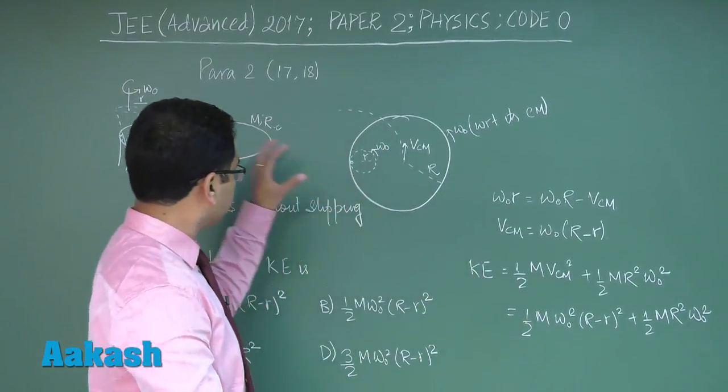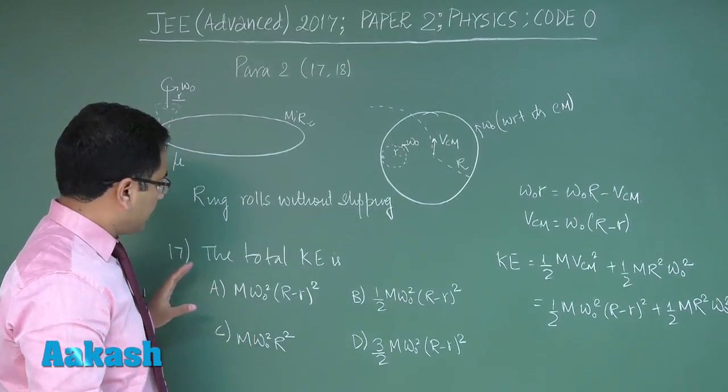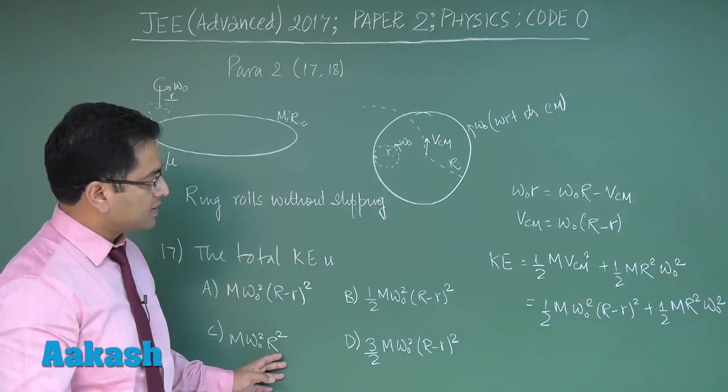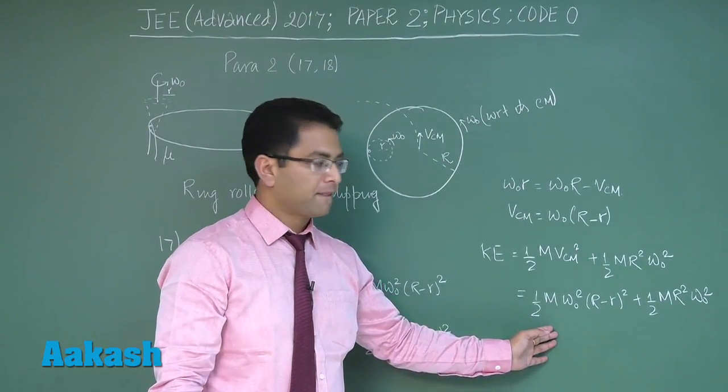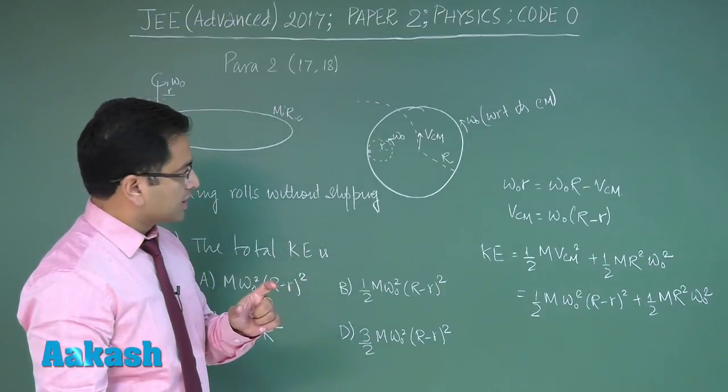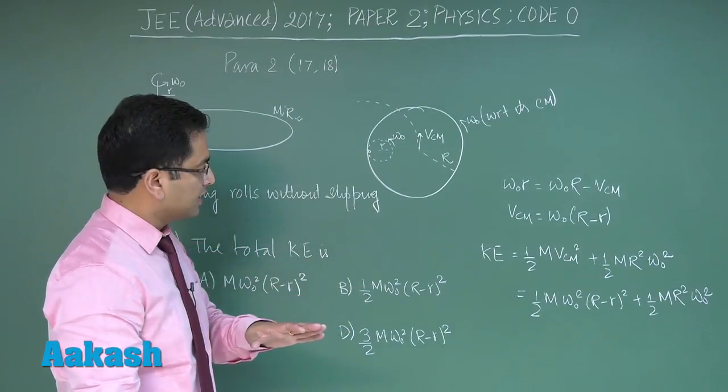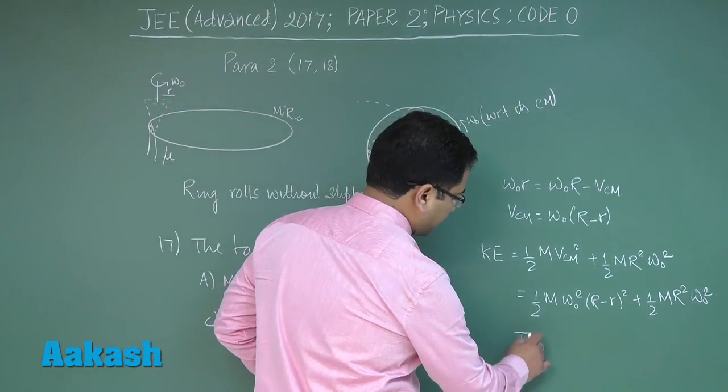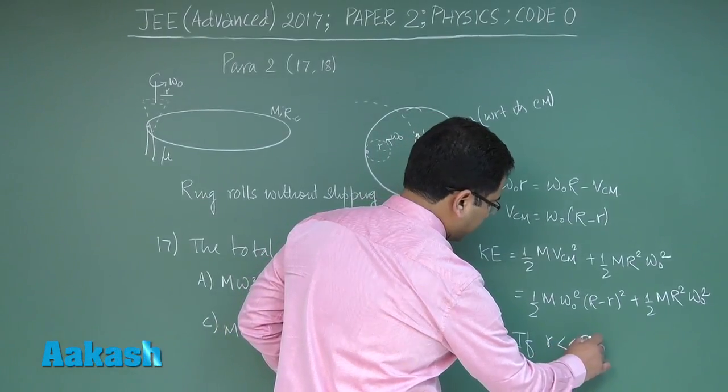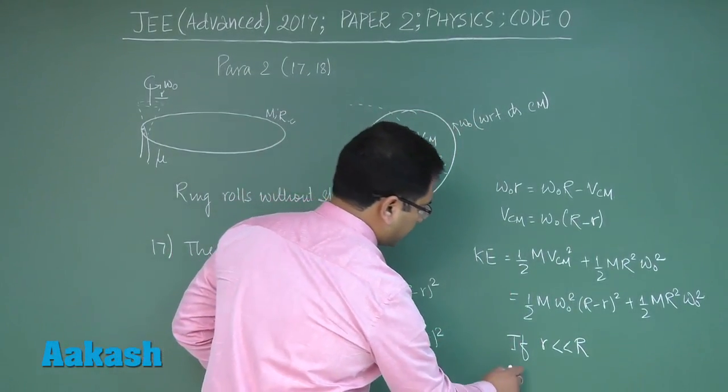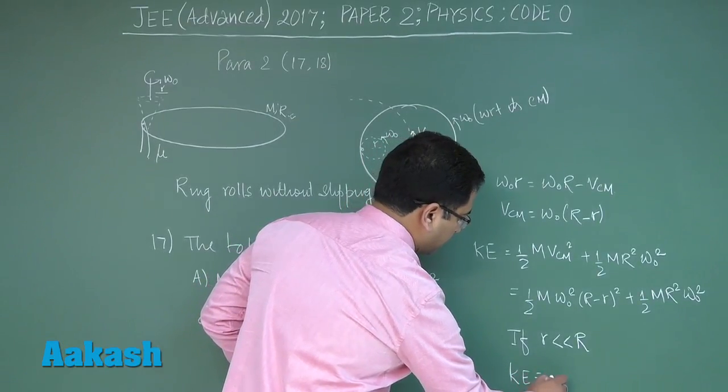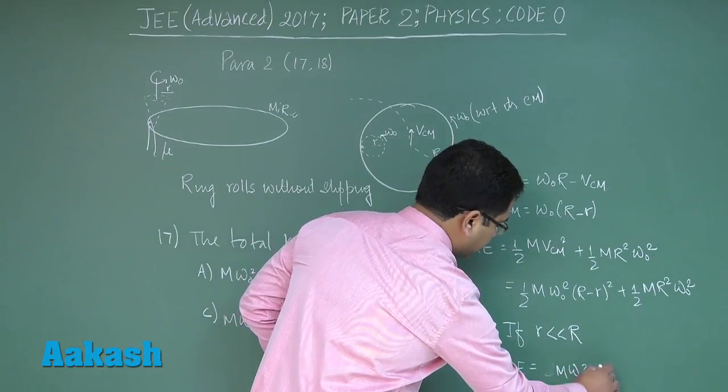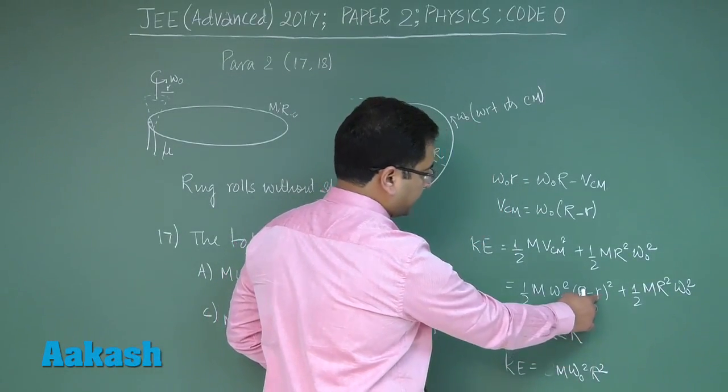However, the options given as per the question paper does not match with the solution that we have found. But in one condition, if we put up that condition - though it's not given in the question, but for the sake of matching the option - if we put up this particular condition: small r very very less than capital R. In that given situation, the kinetic energy would be equal to M omega naught squared R squared, because this would be neglected and that kinetic energy in that case would be matching with option number C.